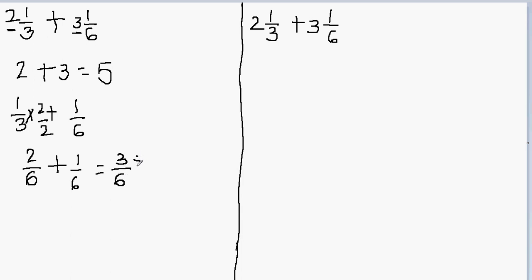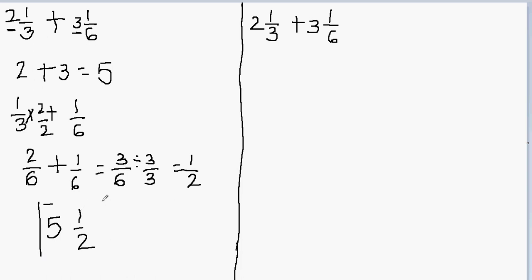We'll divide this fraction by 3 over 3. Since 3 over 3 equals 1, mathematically I have not changed the value of this fraction — I'm just trying to reduce it to simplest form. So 3 divided by 3 will be 1, and 6 divided by 3 will be 2. Now I have my fractional part and my whole part, so I'll write them together. The whole part is 5 and the fractional part is 1 over 2 — my final answer is 5 and 1 over 2.